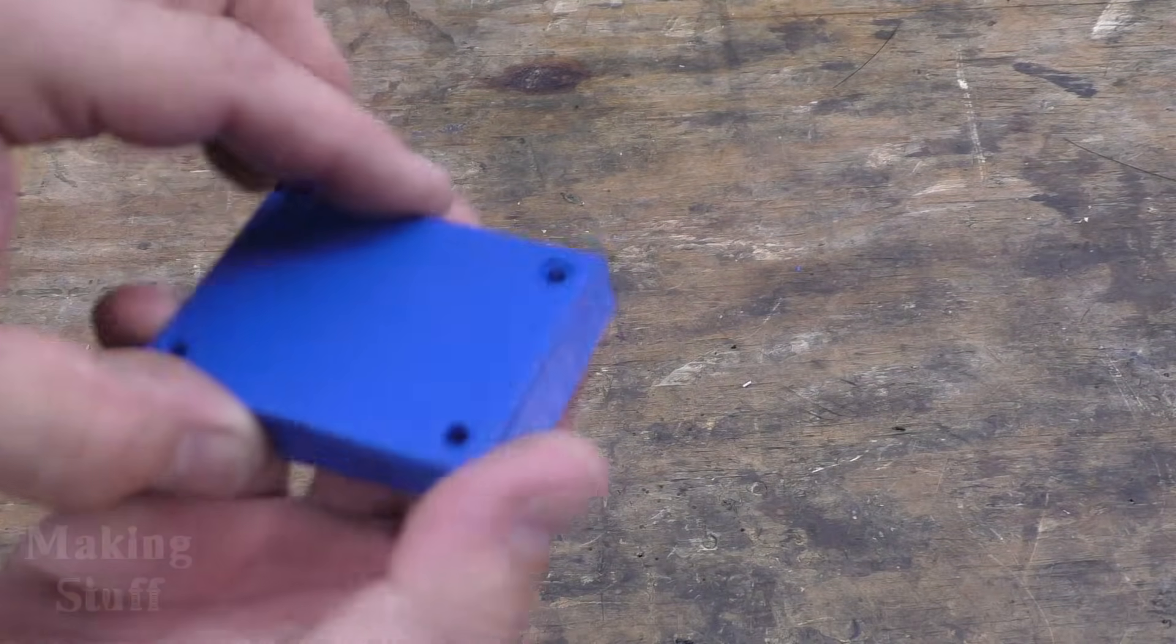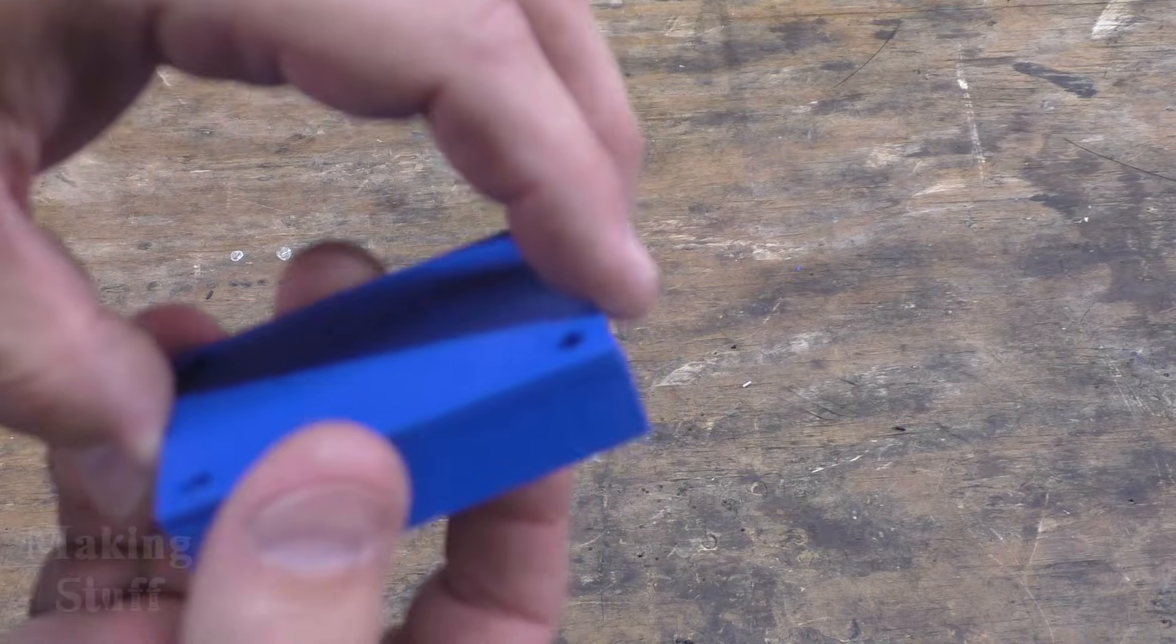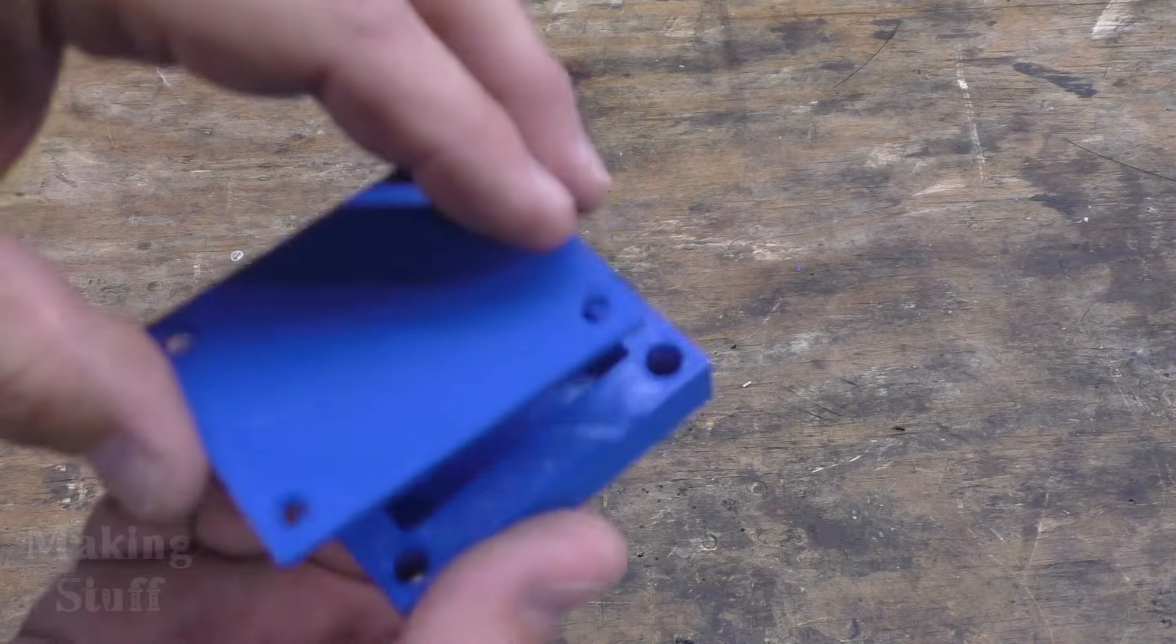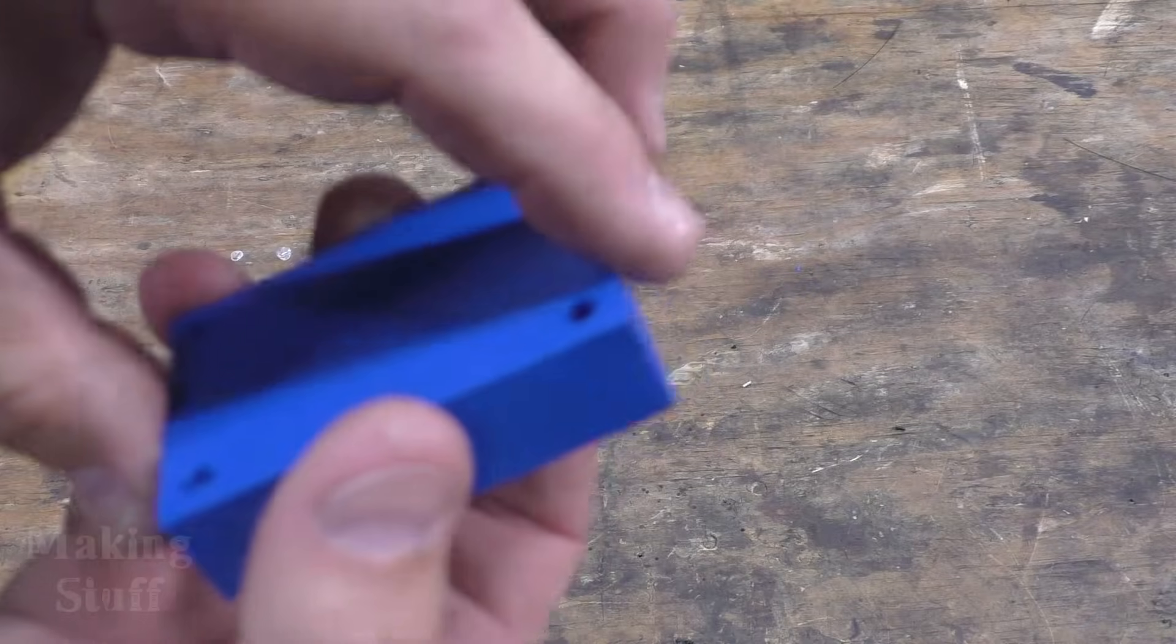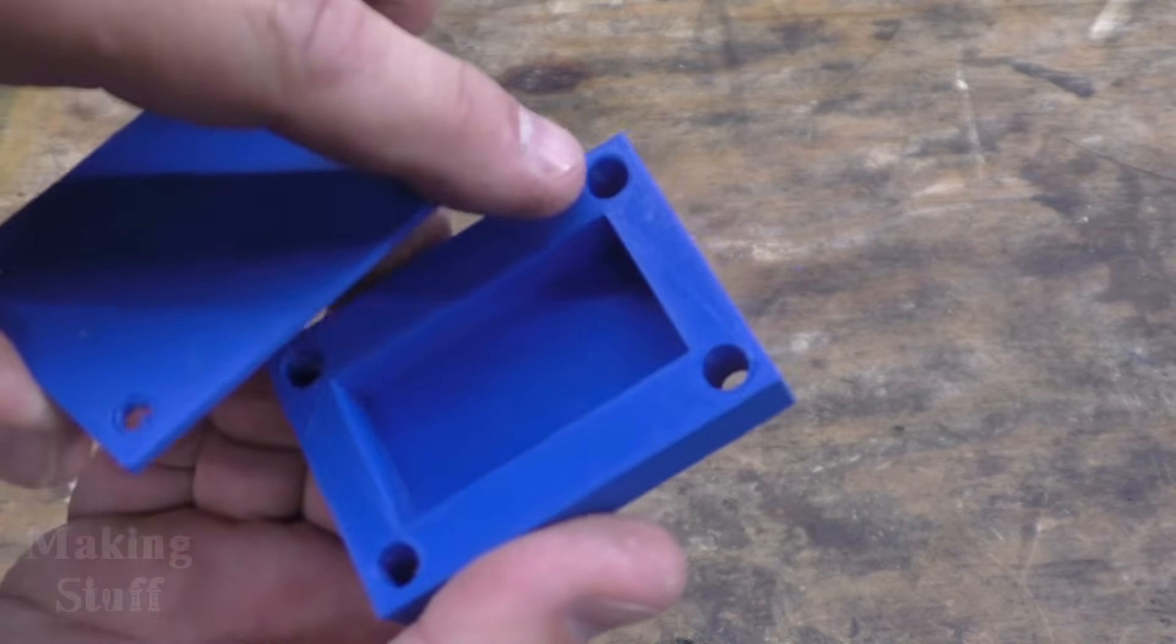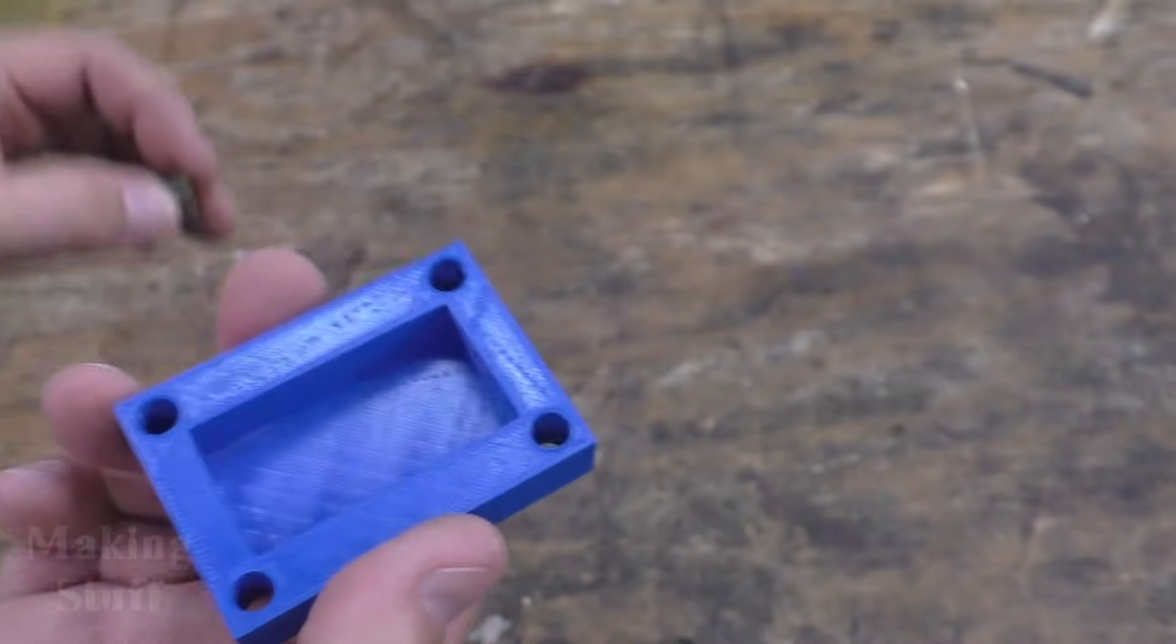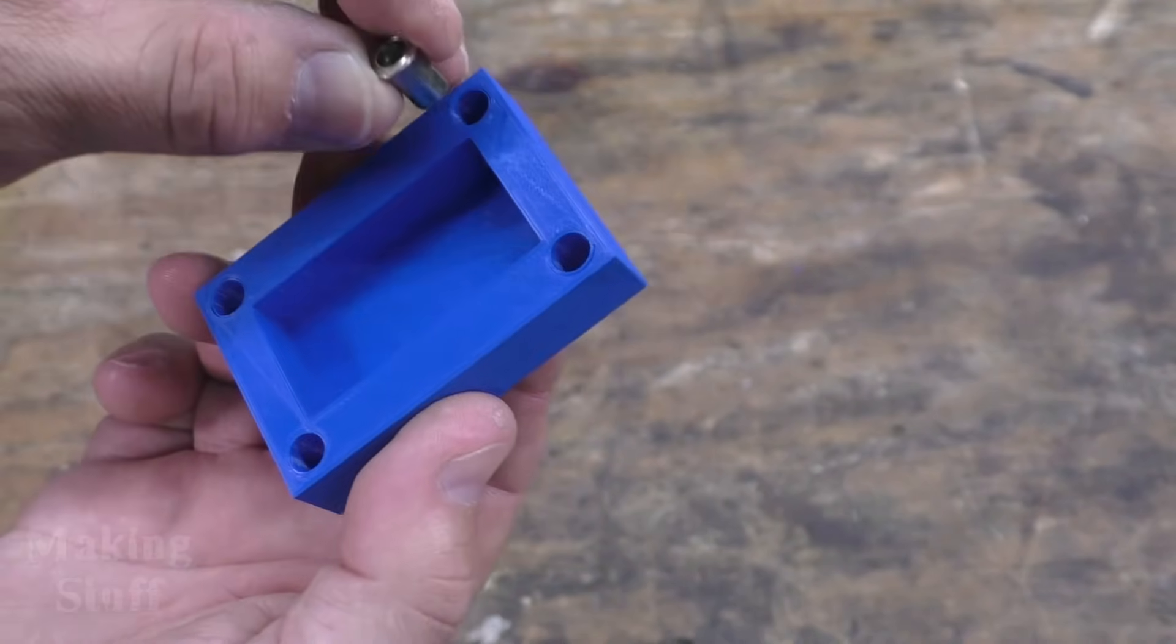Another use for these rivet nuts is on 3D printed parts. And I could just represent, say, an enclosure that I'm going to put electronics in. And I just want to add and remove this lid multiple times without having to worry about stripping the threads in the plastic. So what I can do is I can install rivet nuts in the holes here instead of using screws.